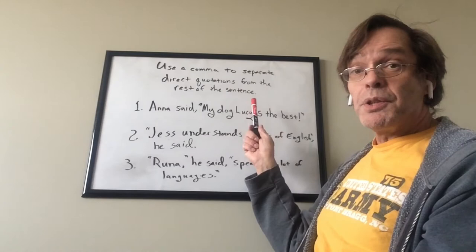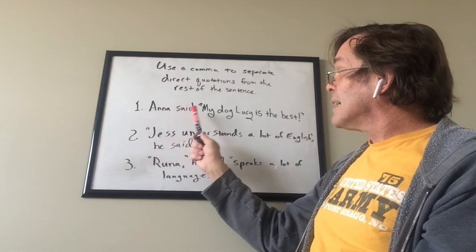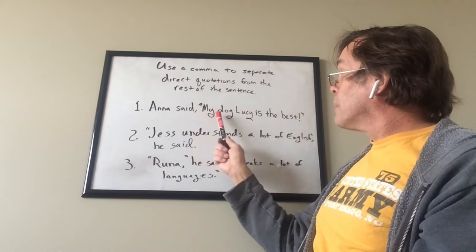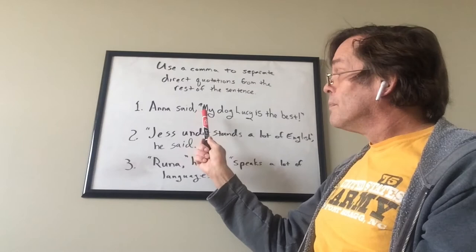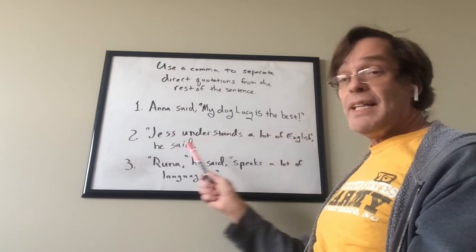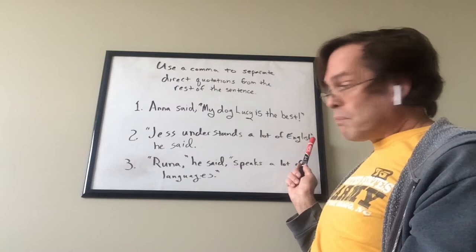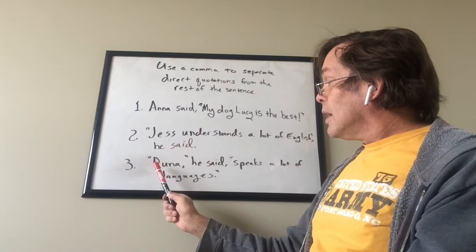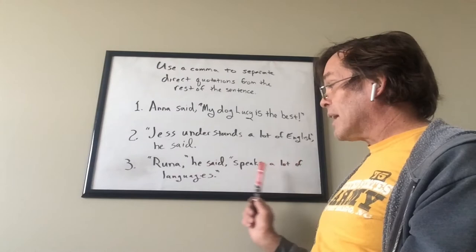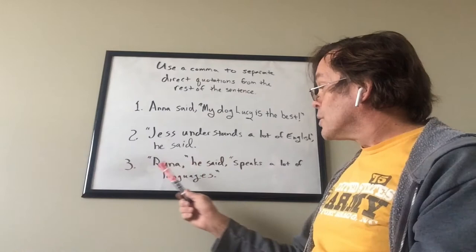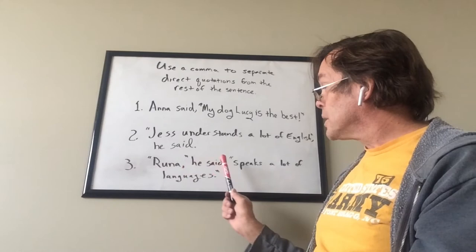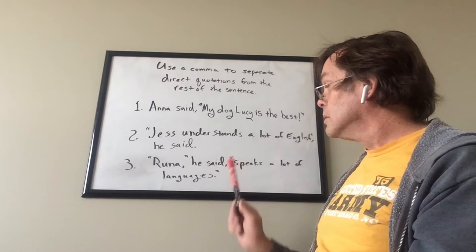You also use a comma to separate direct quotations from the rest of the sentence. In the first example: 'Anna said, my dog Lucy is the best' — the comma comes before the quotation. In the second example: 'Jess understands a lot of English, he said' — the quotation comes first and the comma goes after the quotation and before 'he said.' In the third example, 'Runa, he said, speaks a lot of languages' — the quotation is broken in half, so there's a comma after the first part and before the second part.